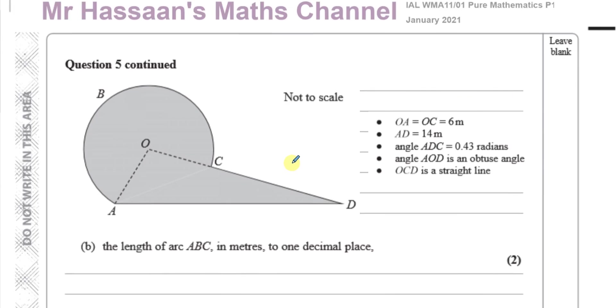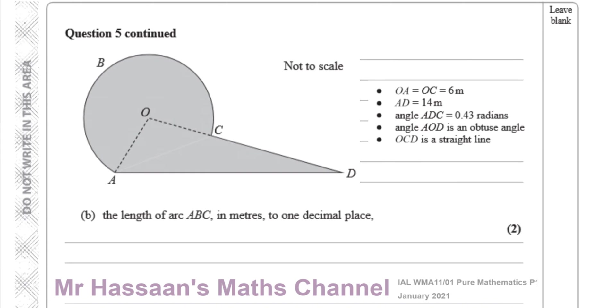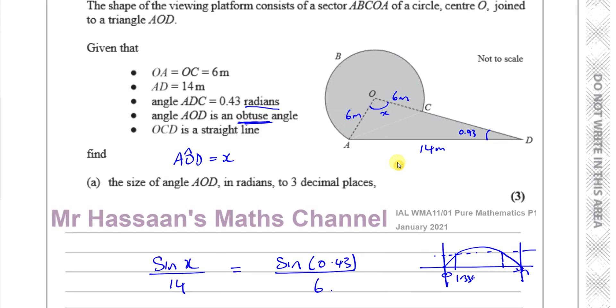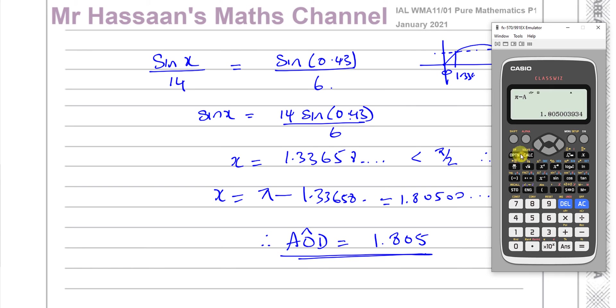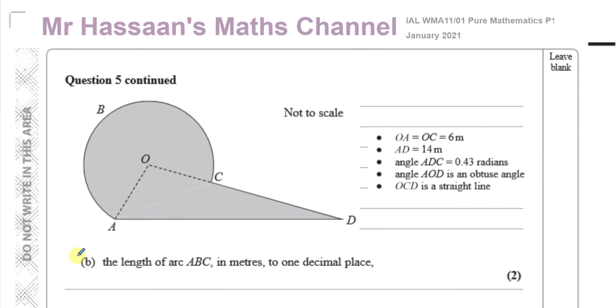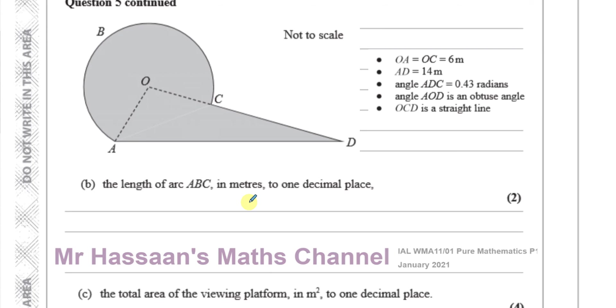Now for part B. We know the angle now is 1.805. In fact what I'll do is I'll just keep this angle here and I'll save it, I'll store it back as A again. So this is now saved as A, 1.805. So I know that this is the angle here AOD, the obtuse angle 1.805 radians. I know this is 6, I know this part is 6, I know this is 14, and this is 0.43.